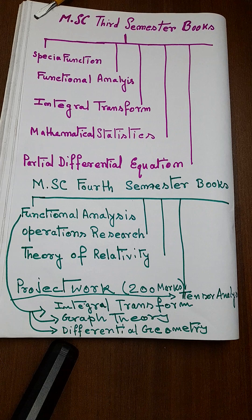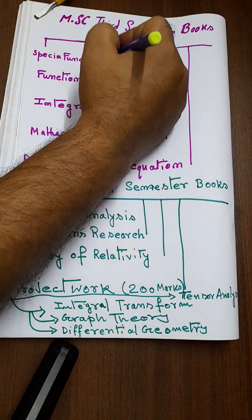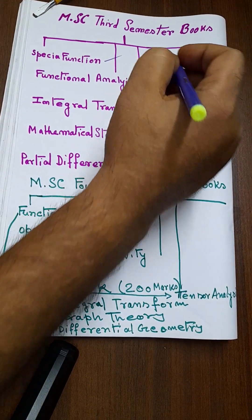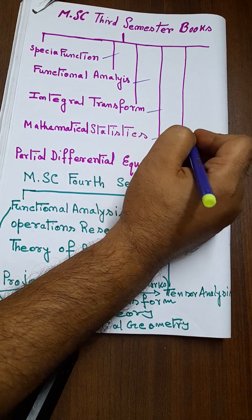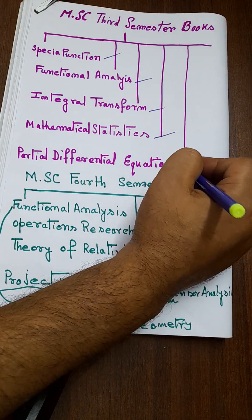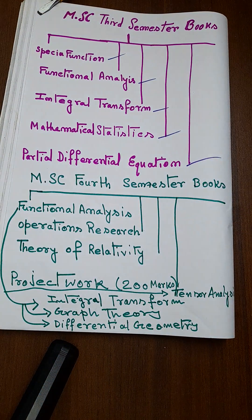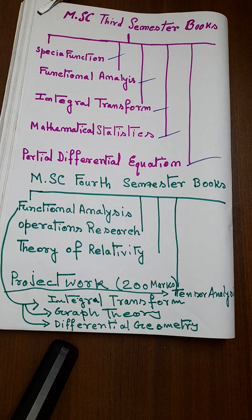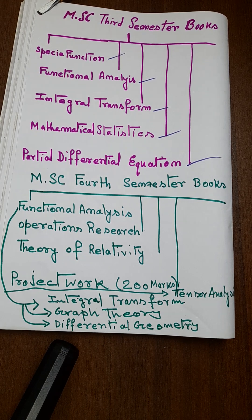In third semester, for 90 percent of universities, we have the following subjects: Special Functions, Functional Analysis, Integral Transform, Mathematical Statistics, and Partial Differential Equations. These are the papers for 90 percent of universities in third semester — for 10 percent it may differ. So let me show you the best book for Special Functions first.